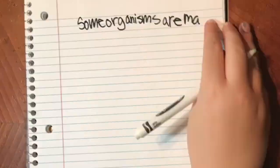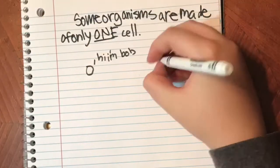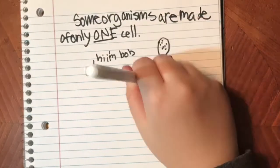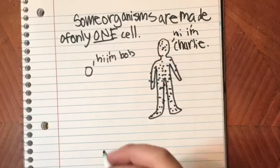Some organisms are made of only one cell, like Bop. And Charlie is made of several cells.